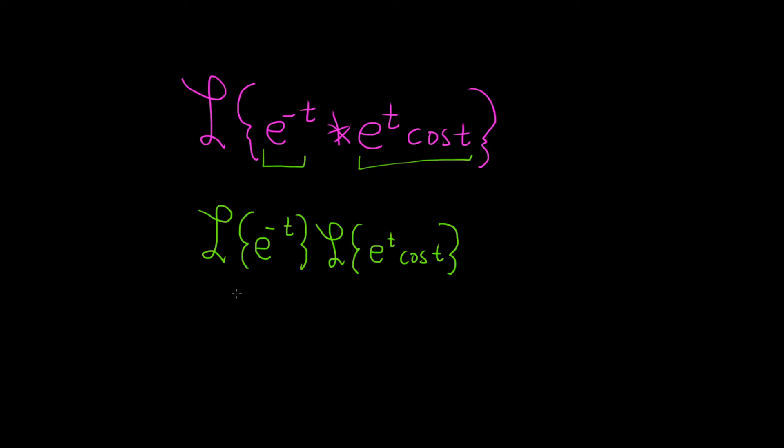There's a couple formulas we need to use here. First recall the Laplace of e to the at is equal to 1 over s minus a. This is a really important formula, totally worth knowing. In this first example here a is negative 1, so this will be 1 over s minus negative 1, which is s plus 1.